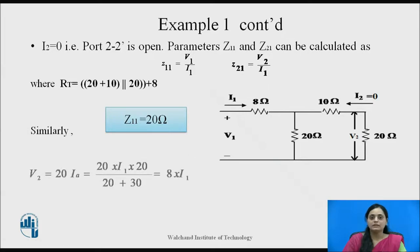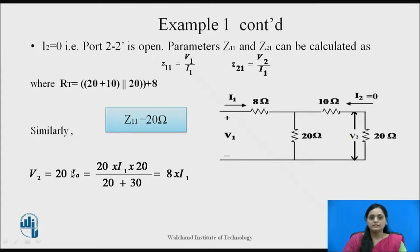Similarly, Z21 can be calculated using the current division rule. Z21 is the ratio of V2 to I1. Voltage V2 is the voltage across the 20 ohm resistor, and the current through it is found using current division: iA equals I1 multiplied by 20 divided by the total resistance of 20 plus 30, which gives 8 times I1 divided by 10. Hence, the ratio of V2 to I1 gives Z21 equal to 8 ohms.